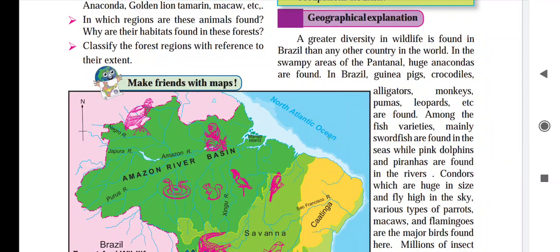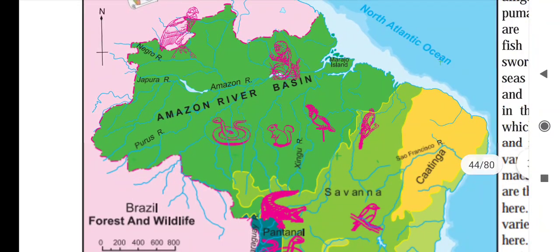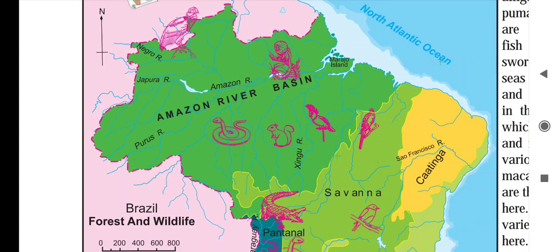Good morning everybody, welcome to today's session. We are going to study the last part of the fifth chapter of geography. In our earlier session we have seen the wildlife and forests of Brazil, where Brazil is a country with greater biodiversity than any other country in the world. Many types of animals and birds are found there. Here is the map of Brazil, where you can see which type of animals are found in which areas.